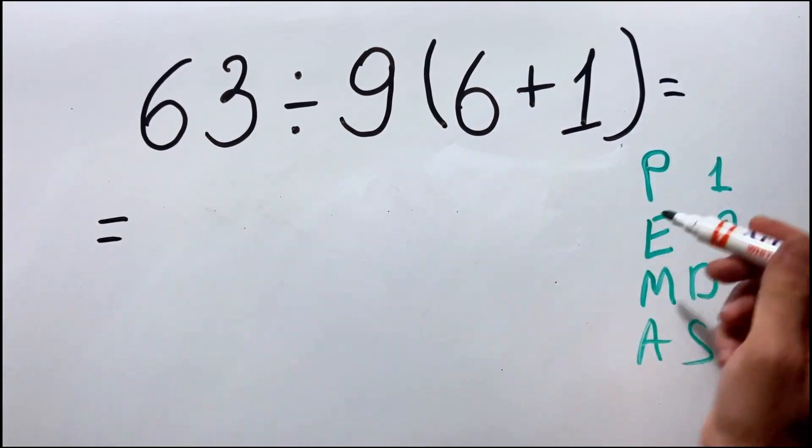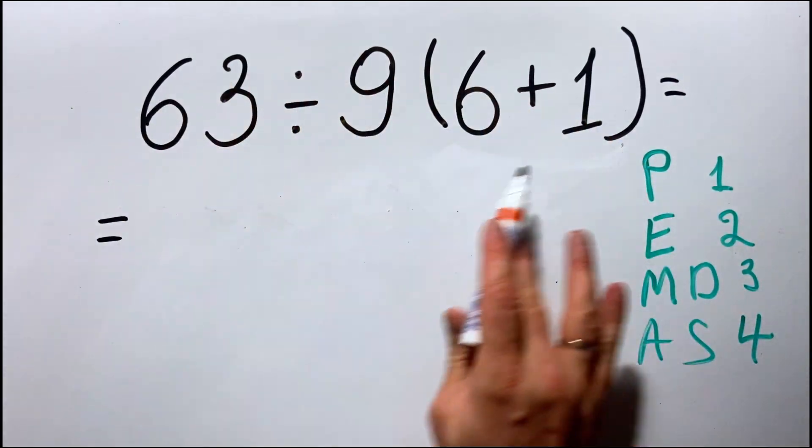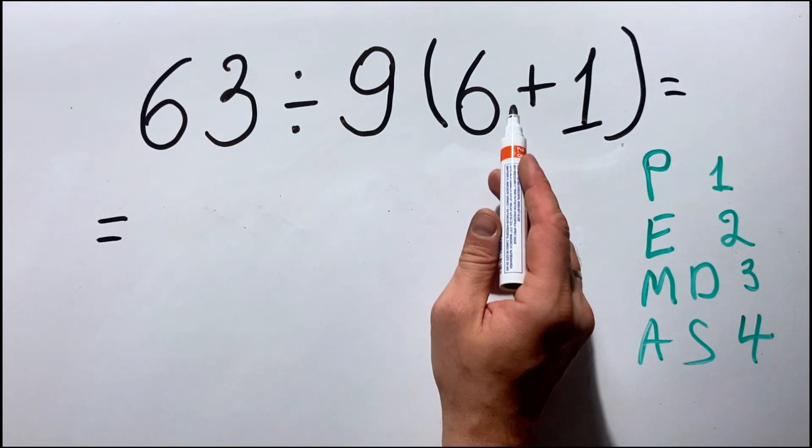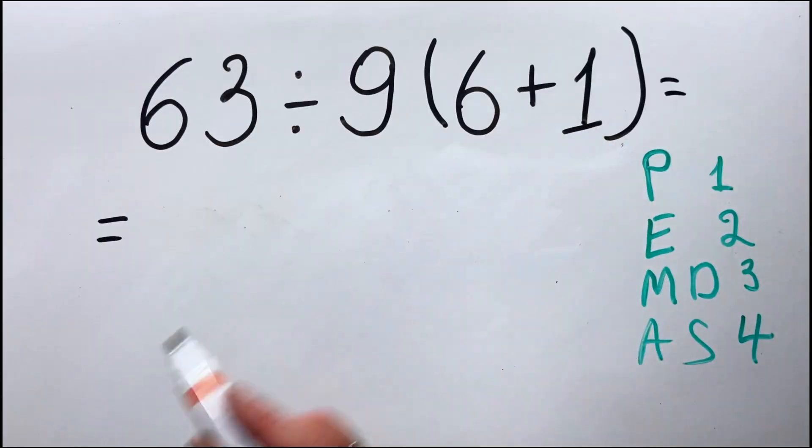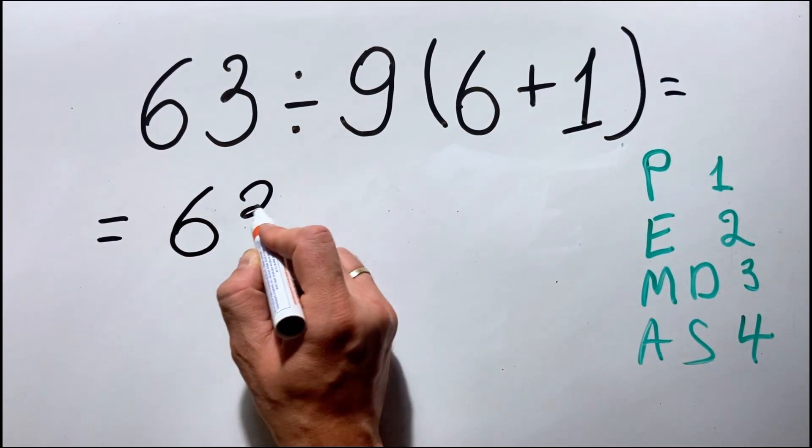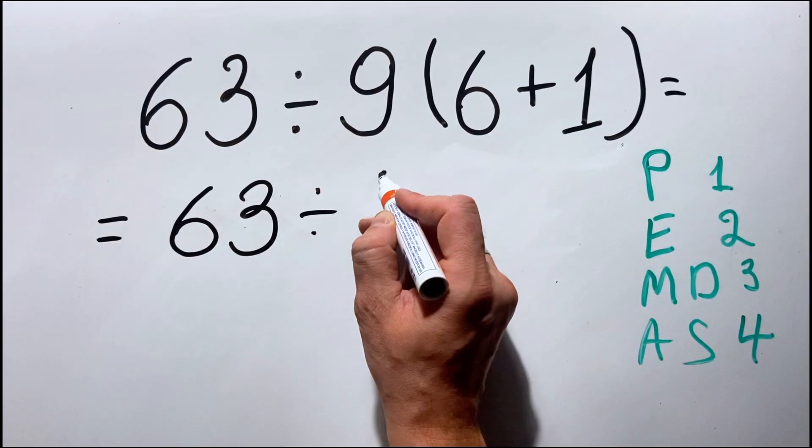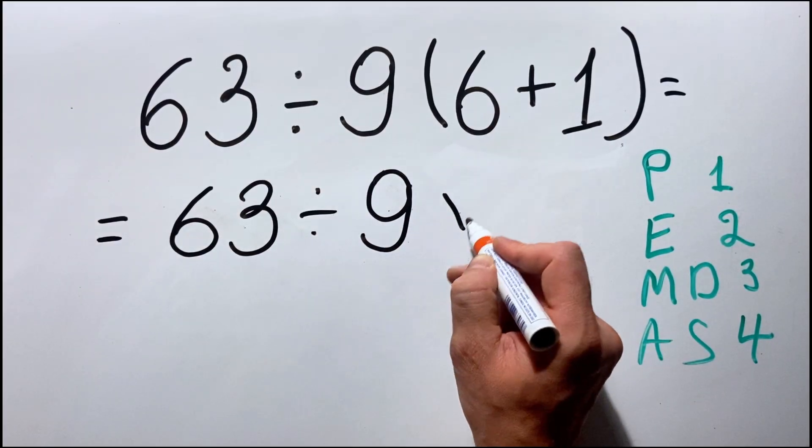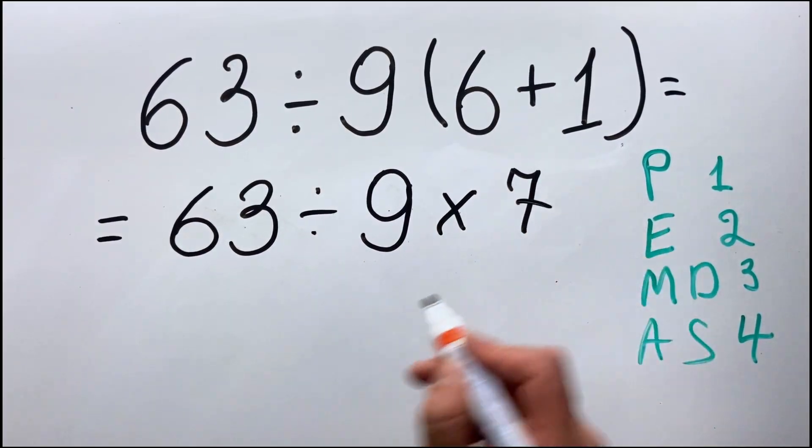If we apply the order of operation to our expression, meaning that we must do first what's inside the parenthesis. So, we get 63 divided by 9 and multiply by 7.